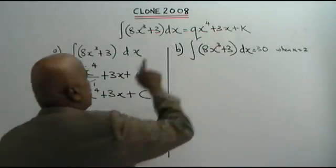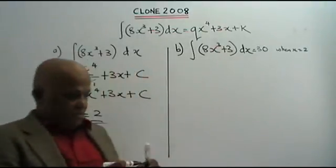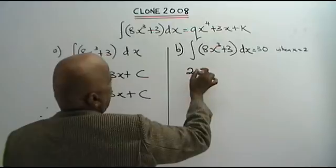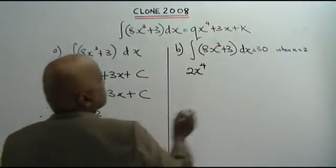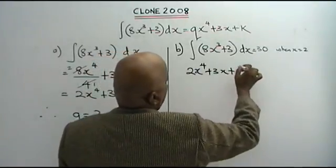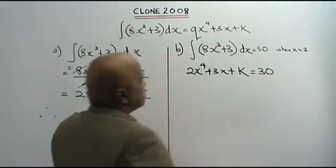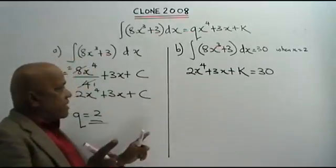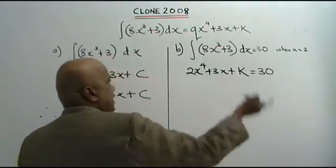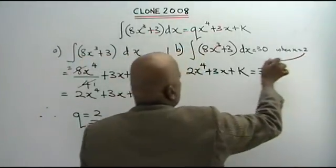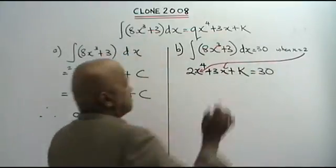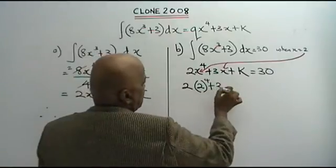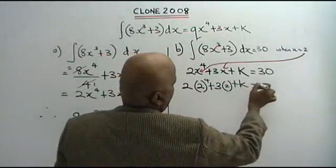Now using the value of Q, we go to Part B. When you integrate this, you get 2x to the power of 4 plus 3x plus K equals 30. When x equals 2, you are asked to find the value of K. So we substitute x equals 2: 2 times 2 to the power of 4 plus 3 times 2 plus K equals 30.